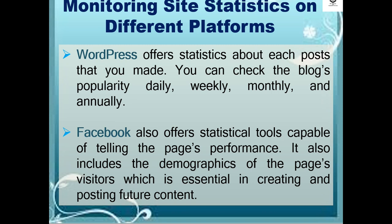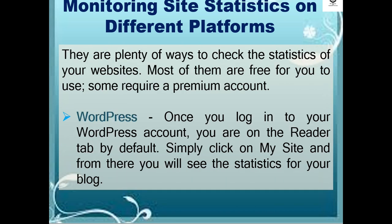WordPress offers statistics about each post that you make. You can check the blog's popularity daily, weekly, monthly, and annually. Facebook also offers statistical tools capable of telling the page's performance, including the demographics of the page's visitors. There are plenty of ways to check the statistics of your websites — most of them are free, though some require a premium account, for example WordPress.